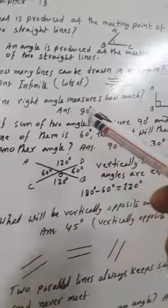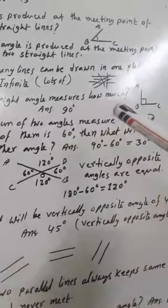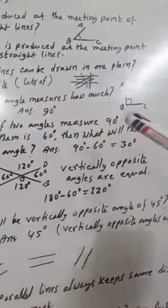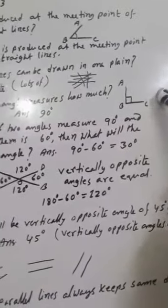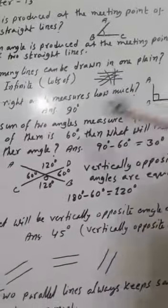One right angle measures how much? One right angle measures 90 degrees.